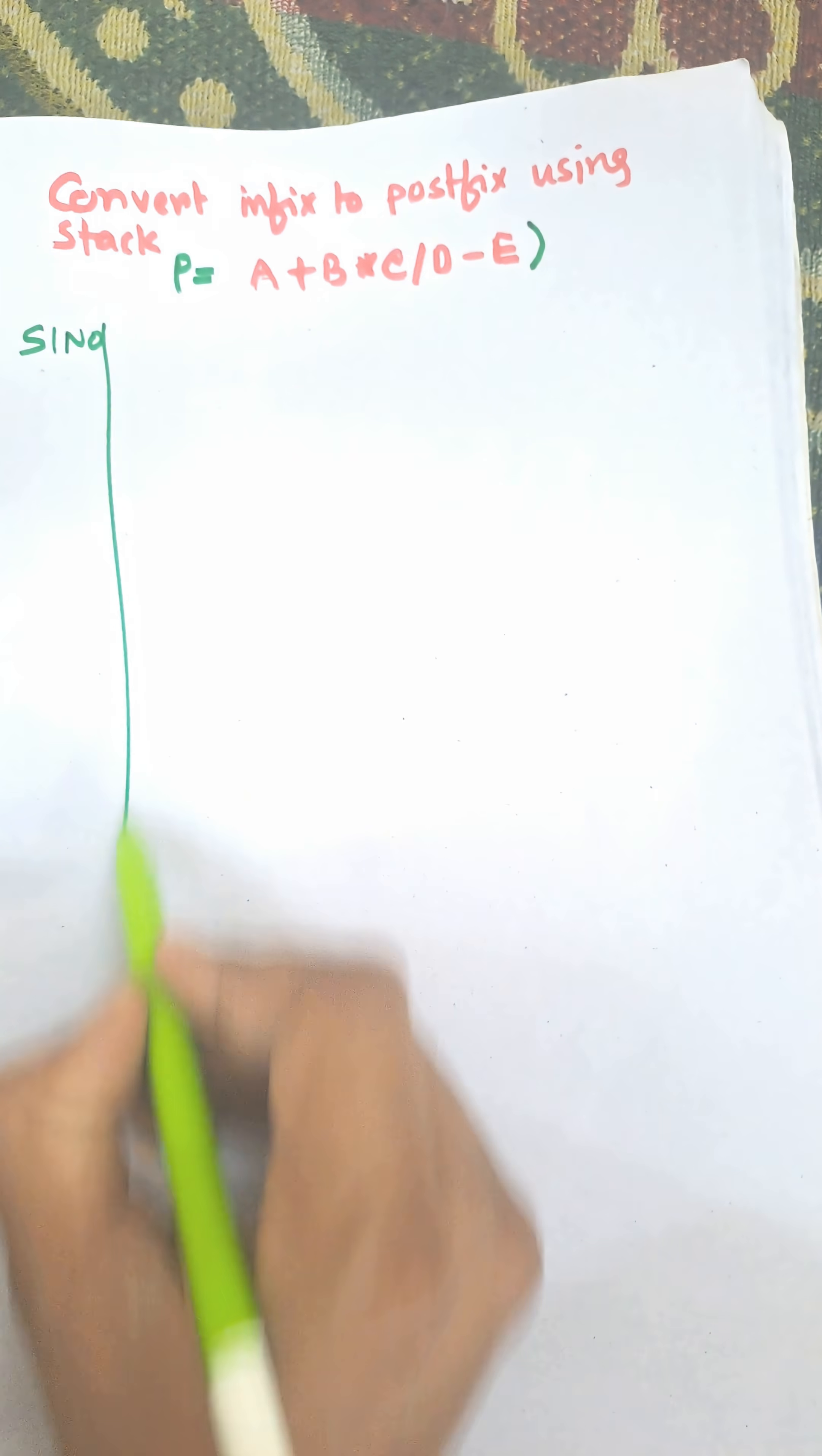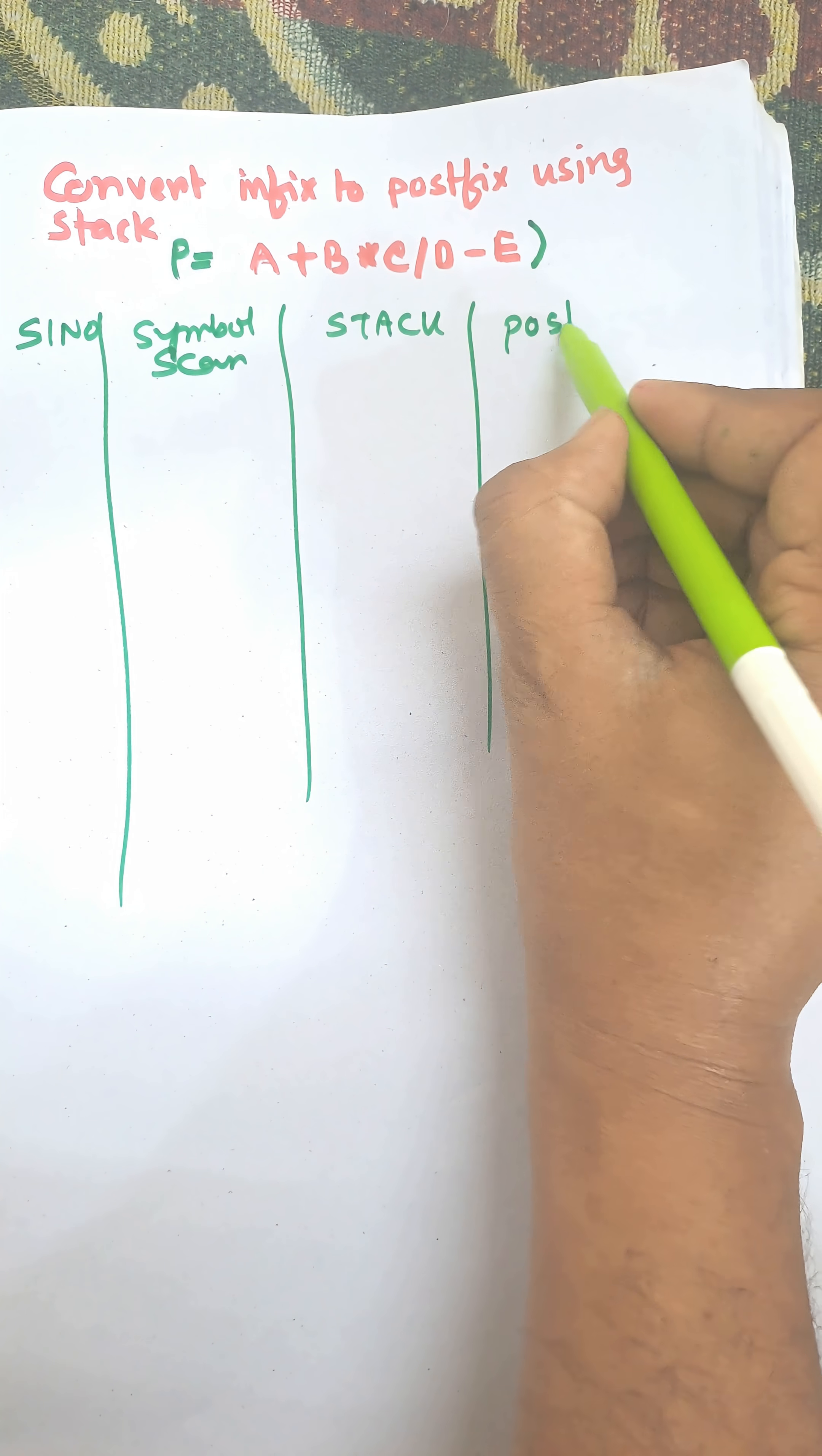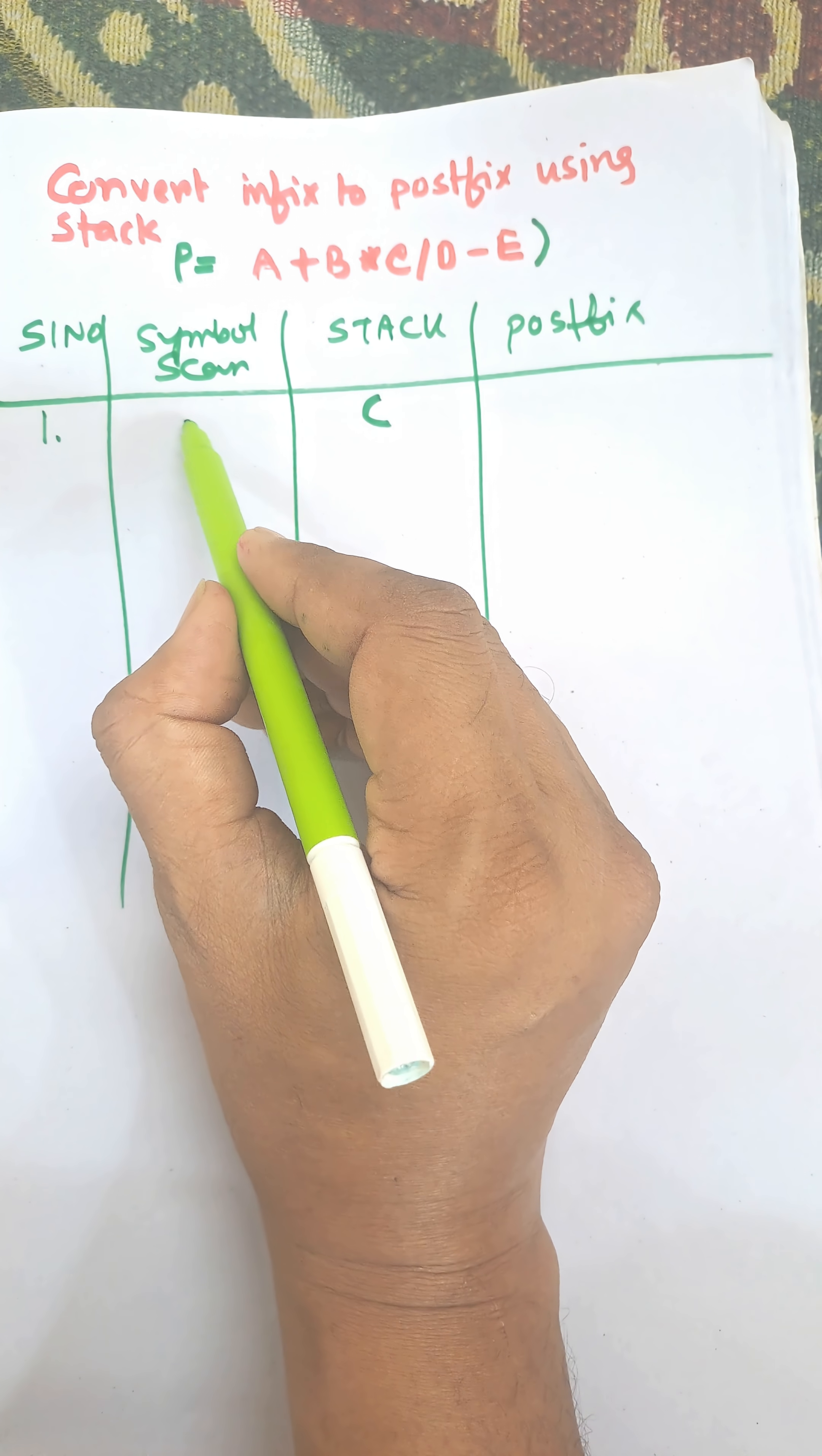These are the steps: serial number, symbol scan, stack, and finally postfix. For serial number one, we need to add an extra opening bracket in the stack and no symbol is scanned.